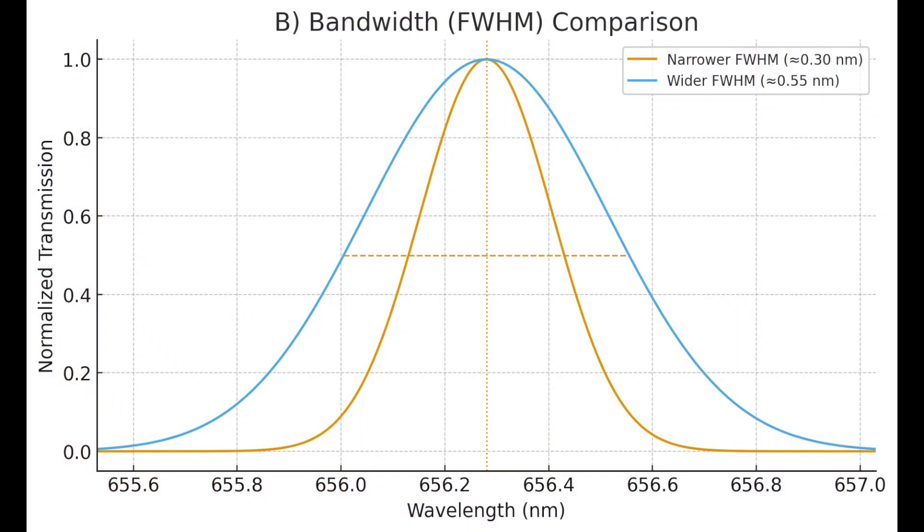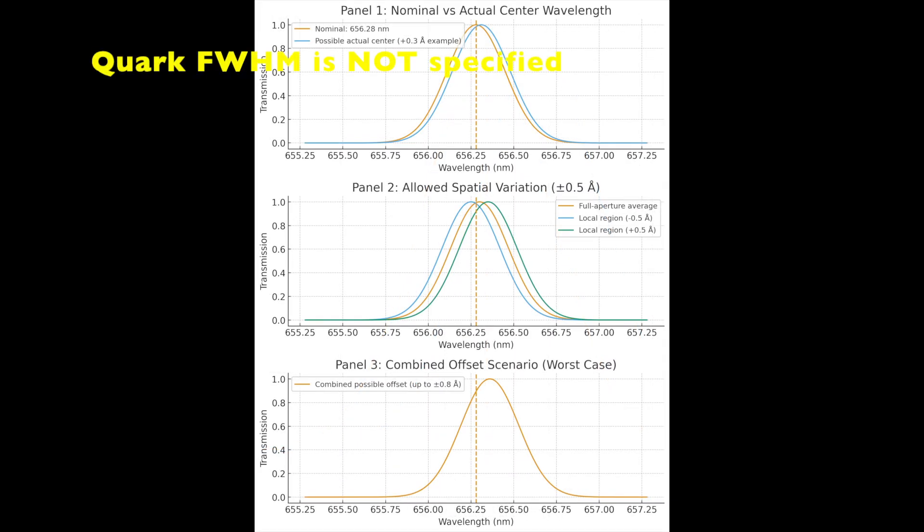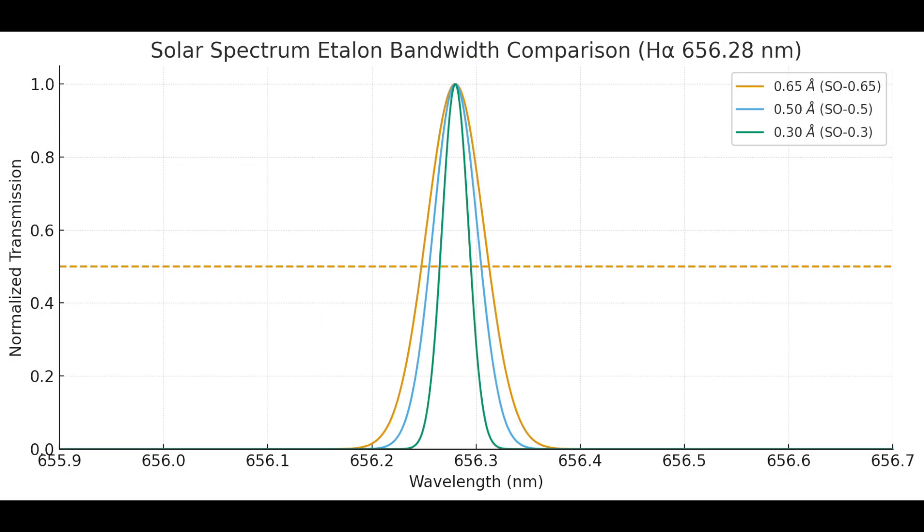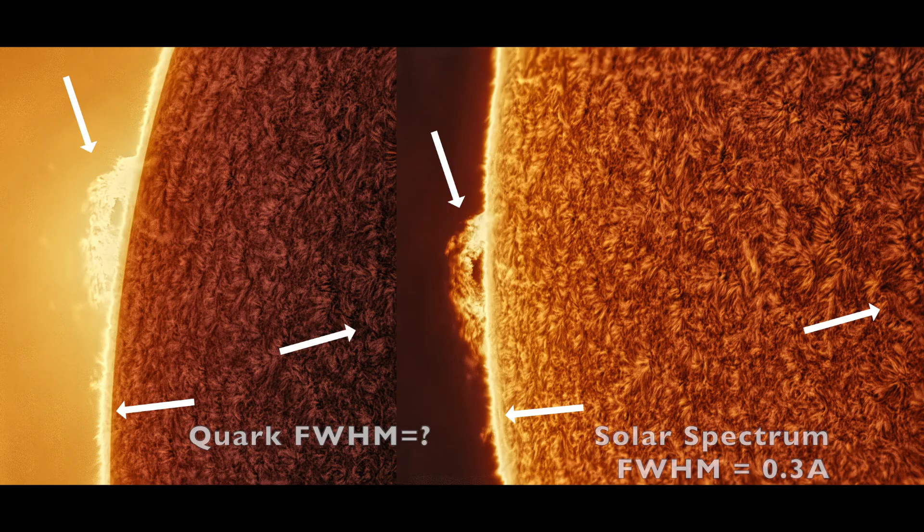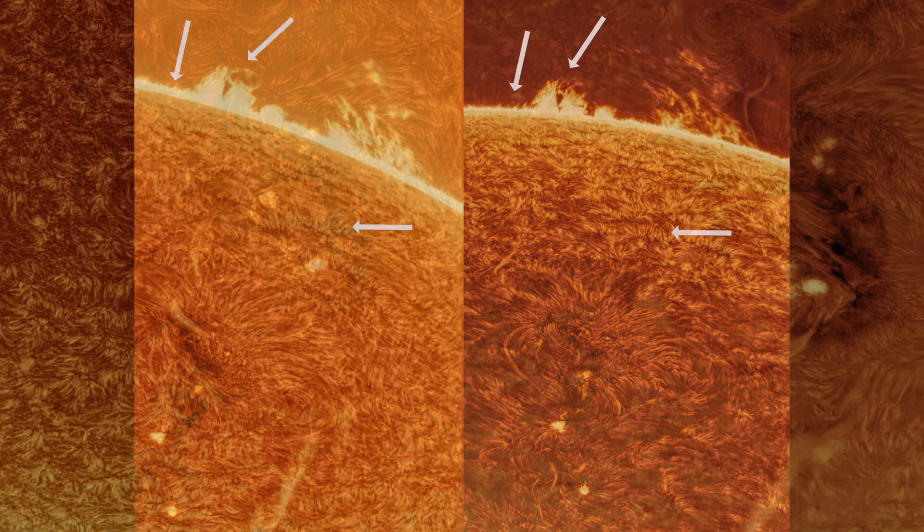Now let's talk about bandwidth and FWHM comparisons. The Quark Chromosphere is officially unspecified. They say that it should be typically 0.45, but we find in real-world measurements that it's unit-dependent and is often well over one angstrom. Solar Spectrum is available in 0.65, 0.5, or 0.3 with explicit specs supplied. Note how narrower FWHM gives you much higher contrast and broader FWHM leaks more of continuum reducing detail. My Solar Spectrum is 0.3 angstroms, which is much narrower than a typical Quark.